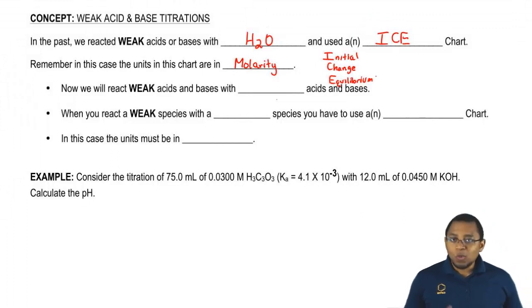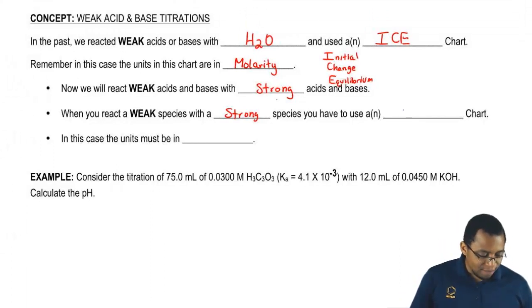Now we're going to react these weak acids and weak bases, not with water but with strong acids and bases. When you react a weak species with a strong species, so a weak acid with a strong base or a weak base with a strong acid, we no longer are going to use an ICE chart. Instead we're going to use a new chart, an ICF chart.